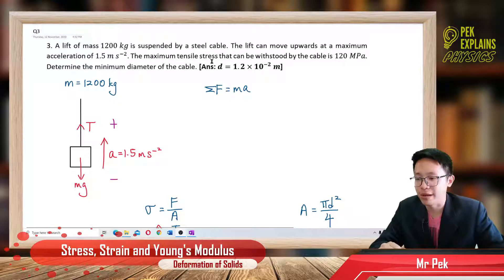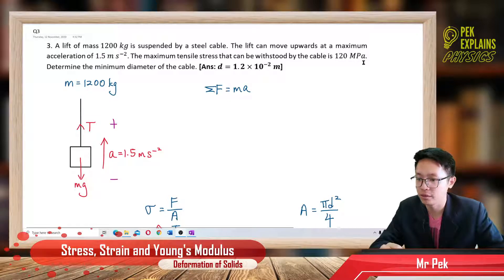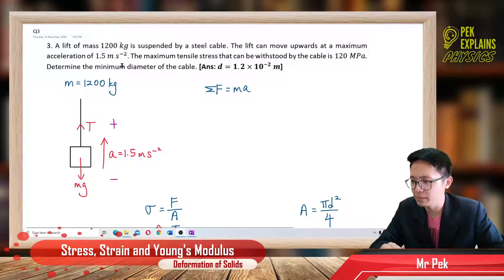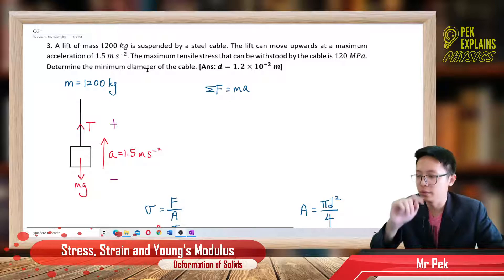The maximum tensile stress that can be withstood by the cable is 120 megapascals — mega needs to be changed to SI units. We need to determine the minimum diameter of the cable. Why minimum diameter? Because of maximum stress. What is the relationship between maximum stress and minimum diameter? We will see later.